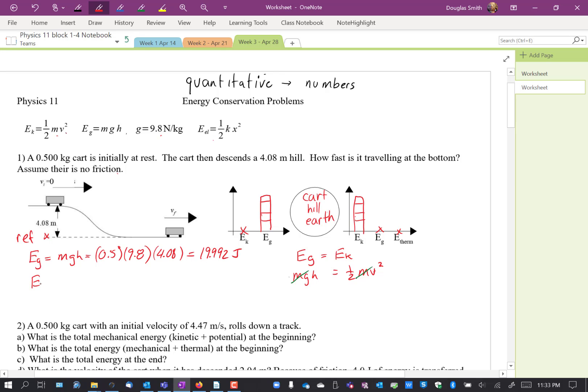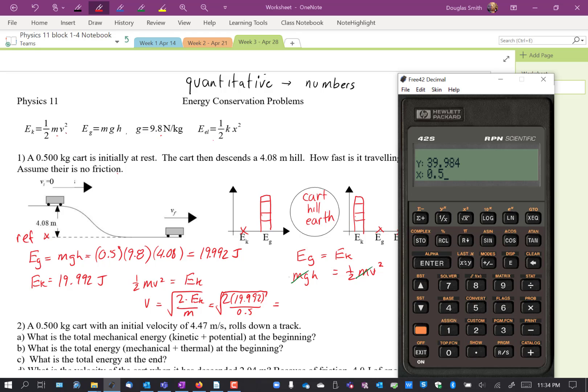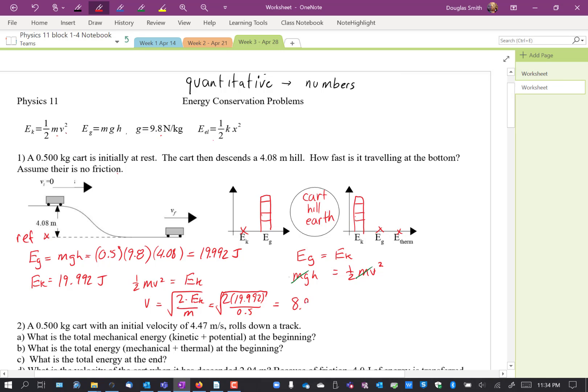Okay, therefore, EK is 19.99 joules. And we have this equation, one-half MV squared equals EK. So V equals the square root of 2 times EK divided by mass. So I'm going to multiply that by 2, divide by 0.5, which is multiply by 2 anyways. And square root, you get 8.9 meters per second.